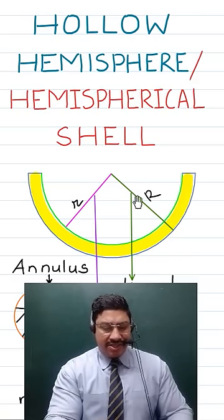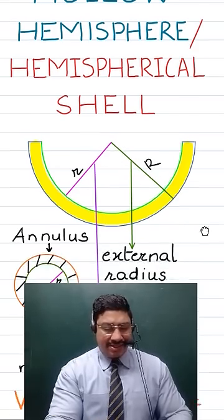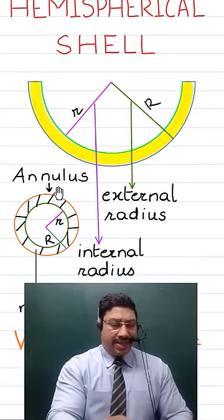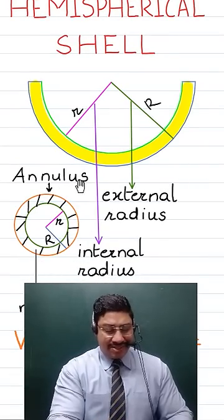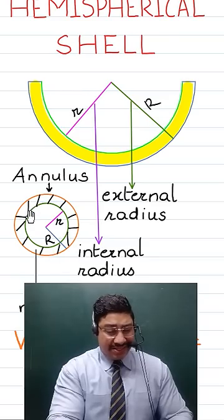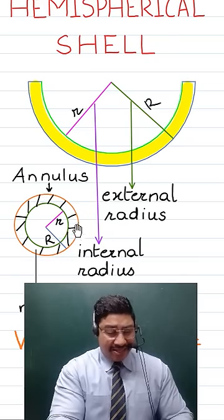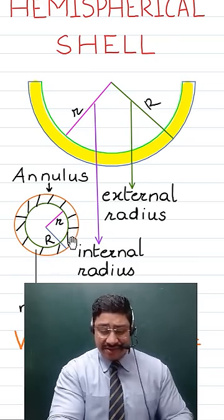So this is the external radius and this is the internal radius, and on top we get a structure like this which is known as the annulus, where we have a portion which is a circle within another circle, and this portion which is between both the circles is where the material is filled in.